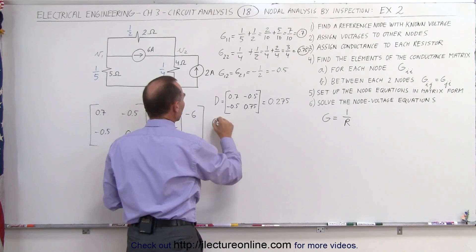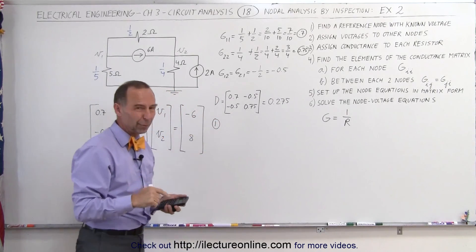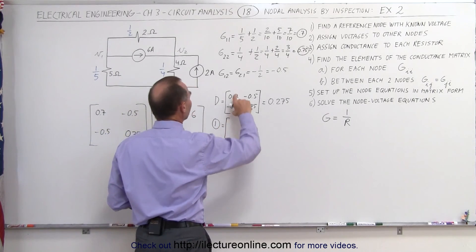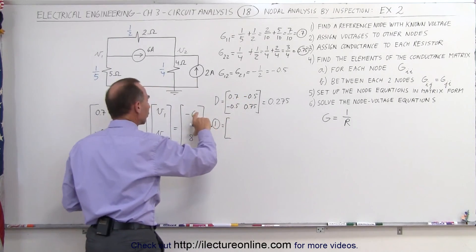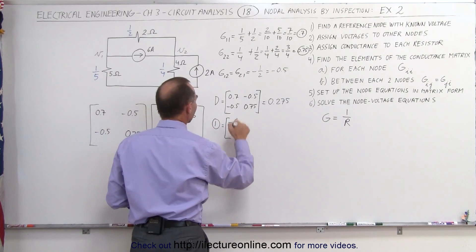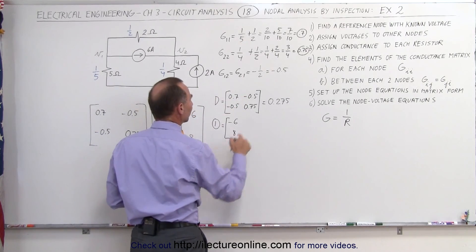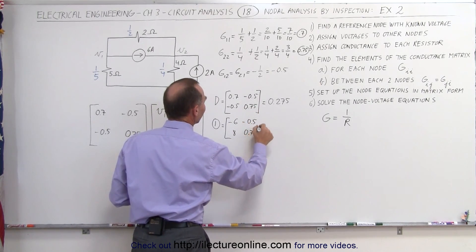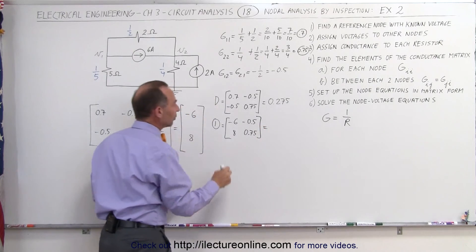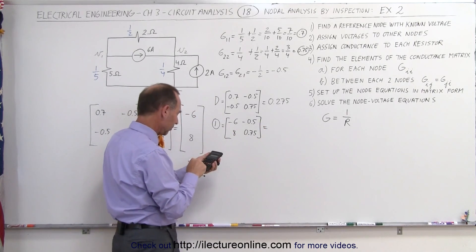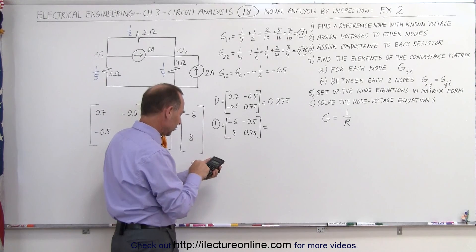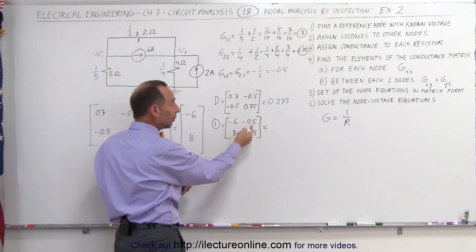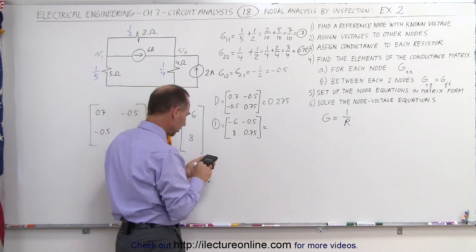We find the first matrix to solve for V1 by replacing the first column with the current matrix: minus 6 and 8, while keeping the second column as minus 0.5 and 0.75. The result is negative 6 times 0.75, which is negative 4.5, and then we add 0.5 times 8, which is plus 4, giving negative 0.5 for that matrix.